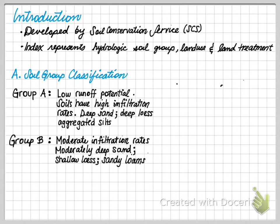Group B has moderate infiltration rates. It includes moderately deep sands, shallow loesses, and sandy loams.